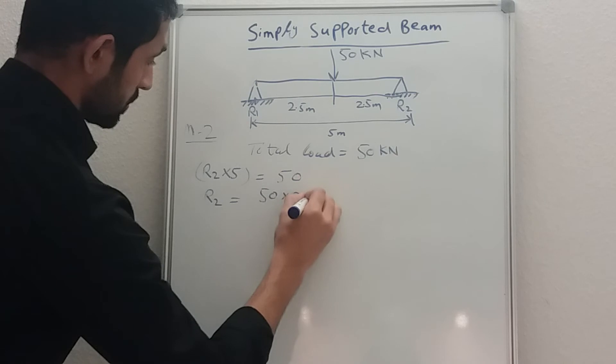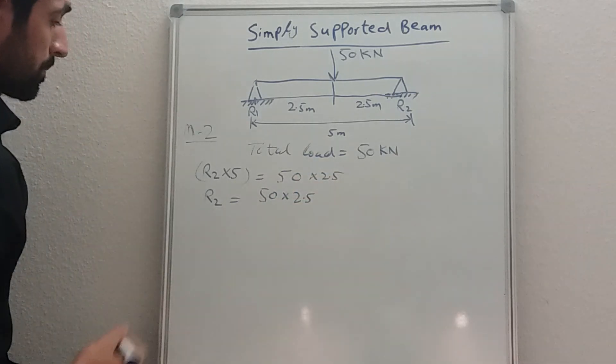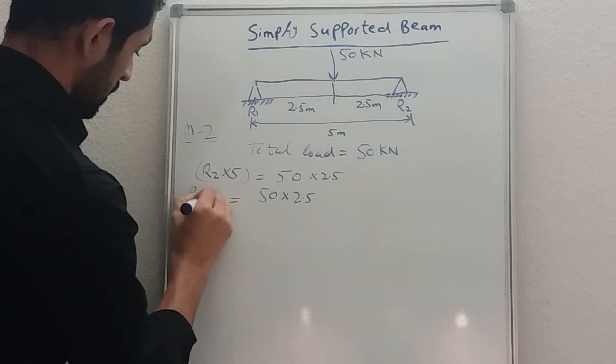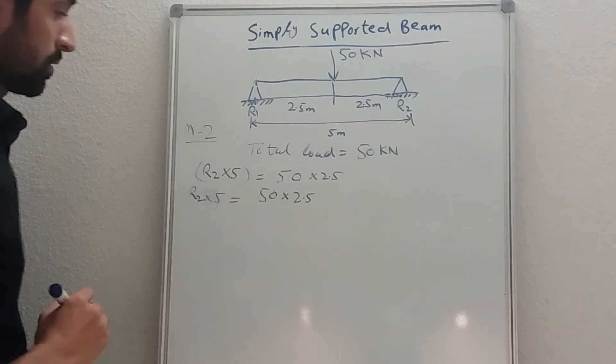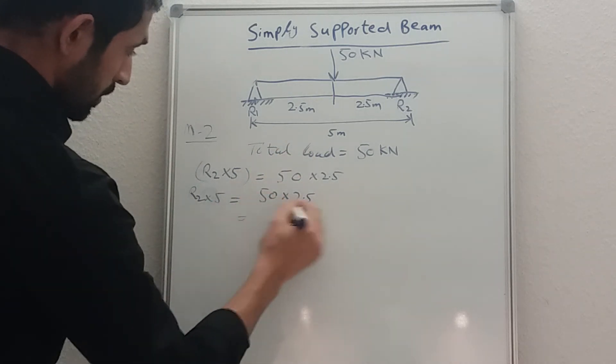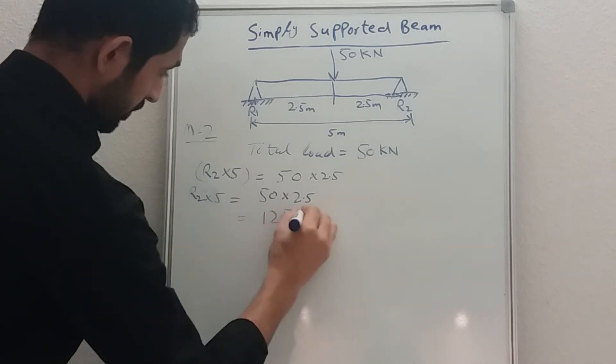Times by 2.5, here you can also add 2.5, it's just the same thing, and also R2 times by 5. Okay, I have just repeated the line again. So what you need to do: 50 times by 2.5 is 125 kilonewton divided by 5, so we have 25 kilonewton.